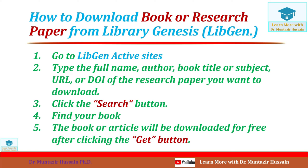Now I will show you how you can download a book or research paper from Library Genesis by following these steps. The first step is to go to the Library Genesis active website — I have provided those links in the description. You can type the full name, author name, book title, or subject. You can also search using the URL of the book or the DOI of the research paper. After typing the information, click the Search button, and then after selecting your result, click the Get button.